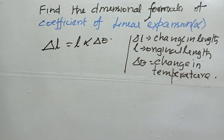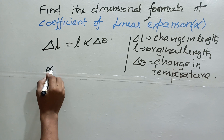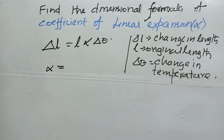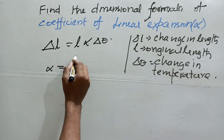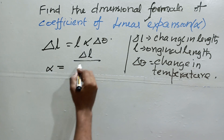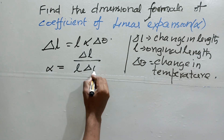Now we need to find the formula of alpha, because we have to find out its dimensional formula. Alpha is given by: α = ΔL / (L · Δθ).